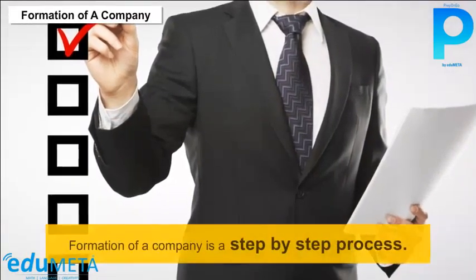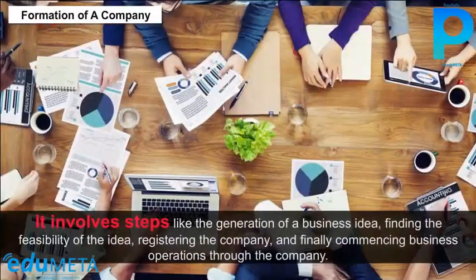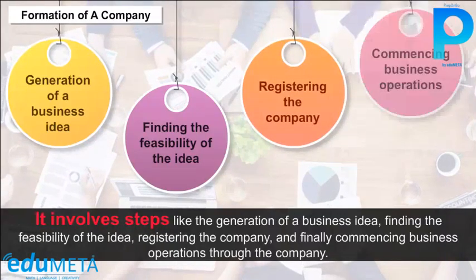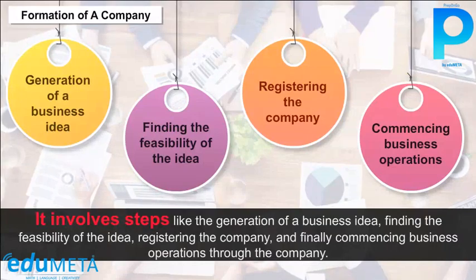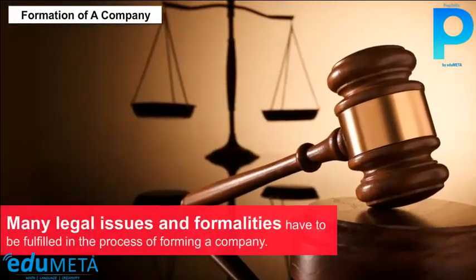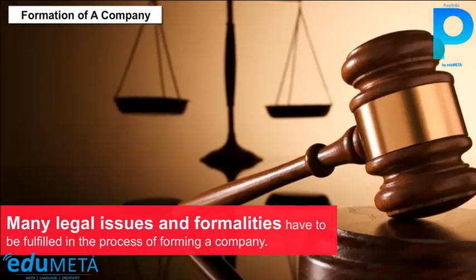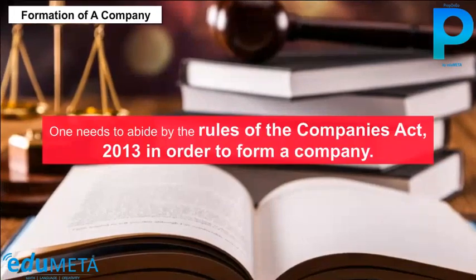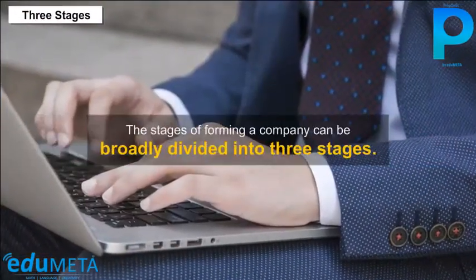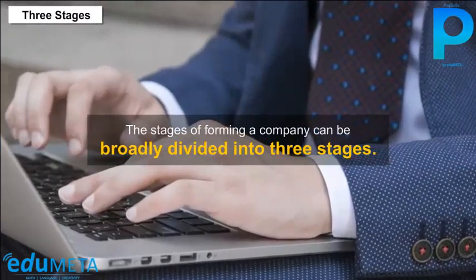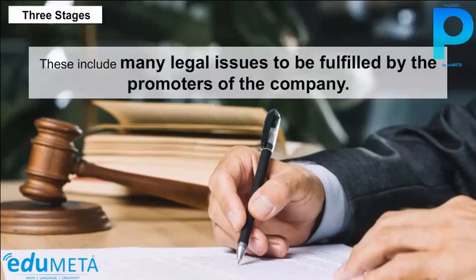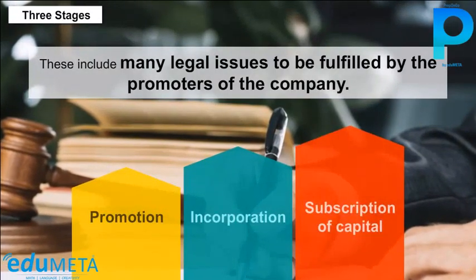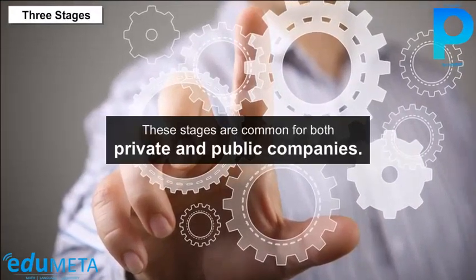Formation of a company is a step-by-step process. It involves steps like the generation of a business idea, finding the feasibility of the idea, registering the company, and finally commencing business operations. Many legal issues and formalities have to be fulfilled, and one needs to abide by the rules of the Companies Act 2013. The stages of forming a company can be broadly divided into three stages: promotion, incorporation, and subscription of capital. These stages are common for both private and public companies.